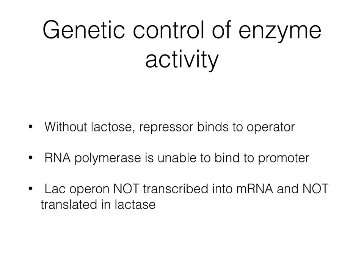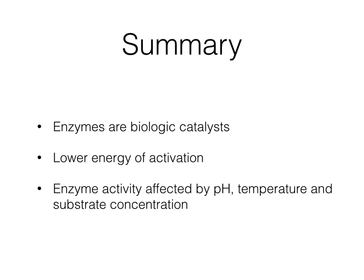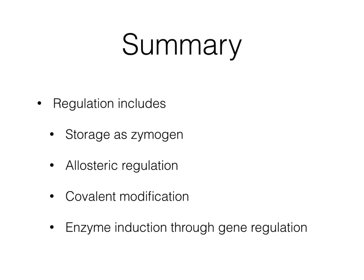To recap: without lactose, the repressor binds to the operator, the RNA polymerase is unable to bind to the promoter region, and the lac operon is not transcribed into mRNA and not translated into lactase. When lactose is present, it binds to the active repressor protein, the repressor is inactivated, the RNA polymerase is now able to bind to the promoter region, and the lac operon is transcribed into mRNA, which is eventually translated into lactase. In summary, enzymes are biological catalysts that function by lowering the energy of activation. Since they are proteins, they can be affected by pH, temperature, and substrate concentration. We have presented four means of enzyme regulation: zymogen cleavage, allosteric regulation, covalent modification — all three for immediate control — and genetic control for long-term control of enzyme activity.